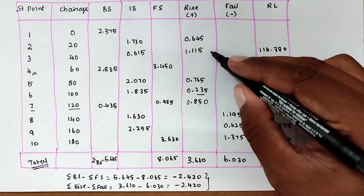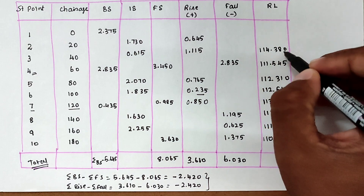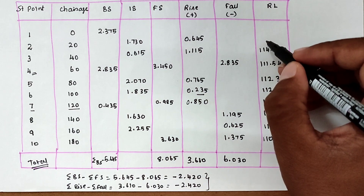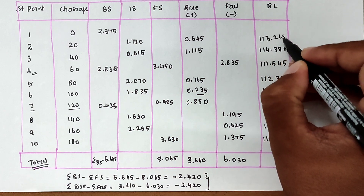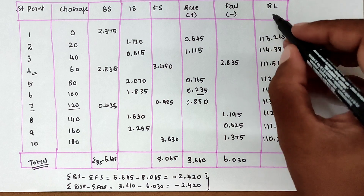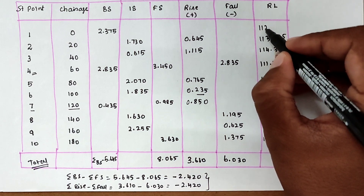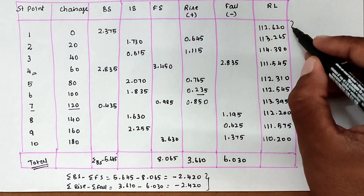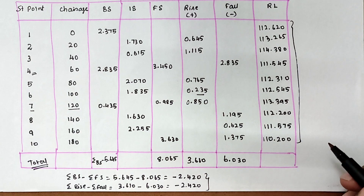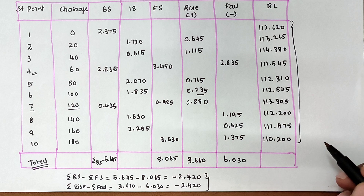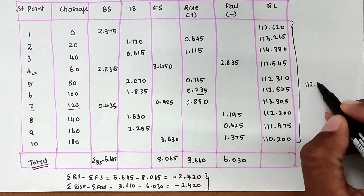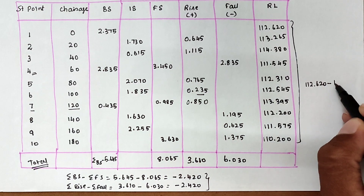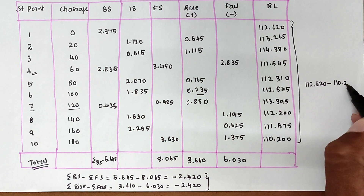Continuing: 114.380 minus 1.115 gives 113.265. Then 113.265 minus 0.645 gives 112.620. These are all the RL values of the respective stations. Now we can verify: RL of the first point minus RL of the last point equals 112.620 minus 110.200 equals 2.420.